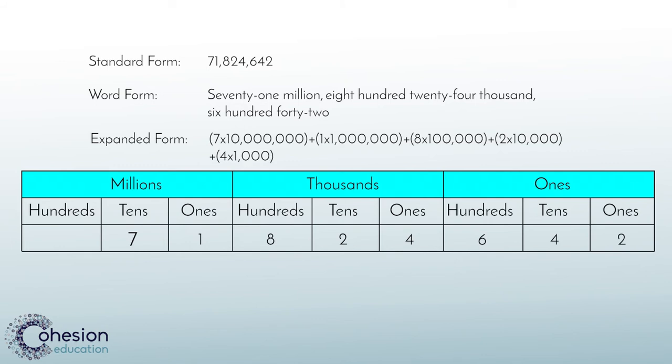Lastly, you will do the same thing for the ones: 6 times 100 plus 4 times 10 plus 2 times 1 because of their corresponding place value positions. Now you have used place value as the foundation to represent a whole number in 3 different ways.